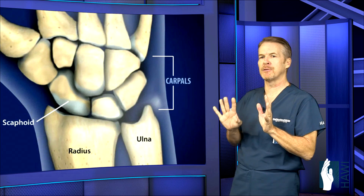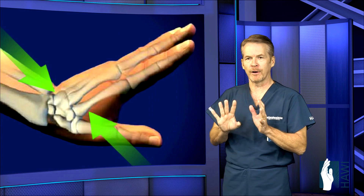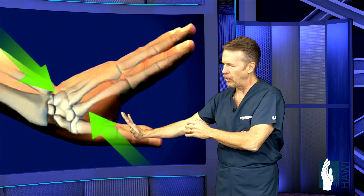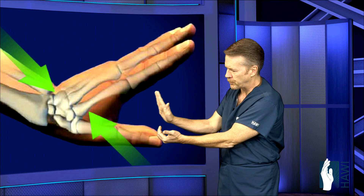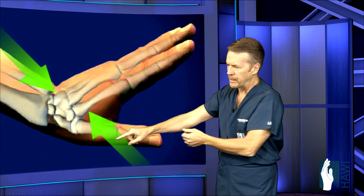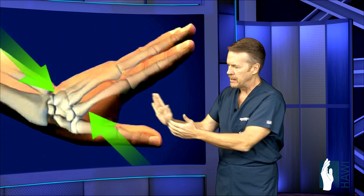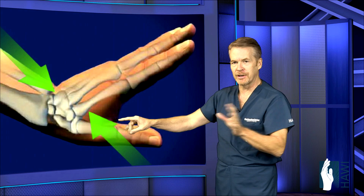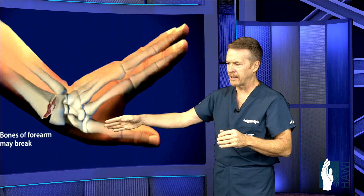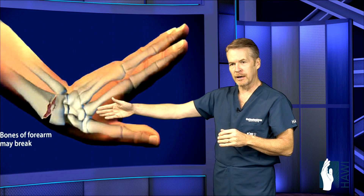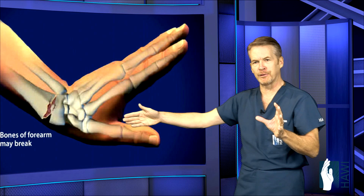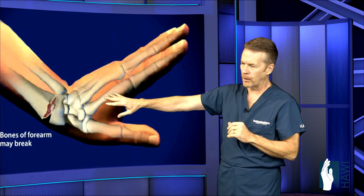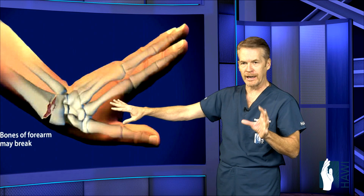Let's look at the mechanism of injury for a distal radius fracture or a scaphoid fracture. A fall on an outstretched wrist, forces going up through the palm, shearing or pushing the wrist backwards. Let's look at an actual Colles' fracture or distal radius fracture. The most common bone at the tip of the forearm bone is a radius fracture.